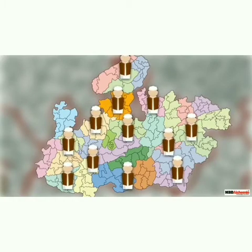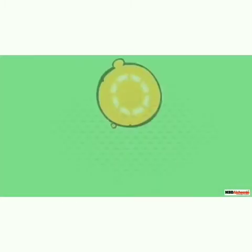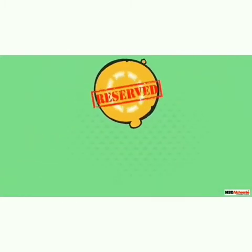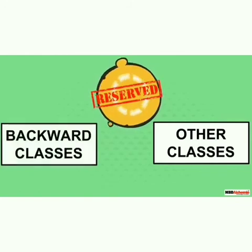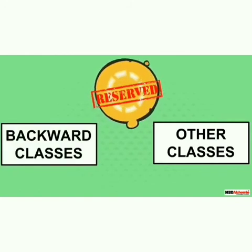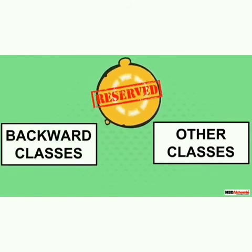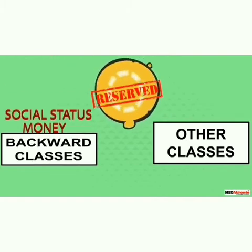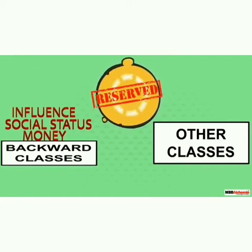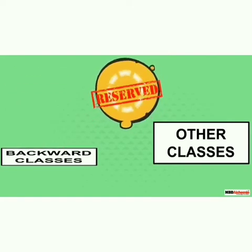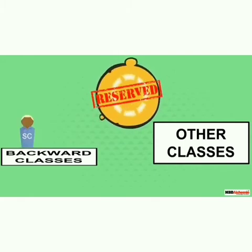Some constituencies are reserved for the weaker sections of the society who cannot compete with other candidates due to lack of resources such as money, social status, and influence because of their gender. Weaker sections include scheduled caste, scheduled tribe, and women.